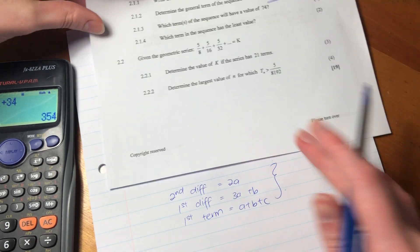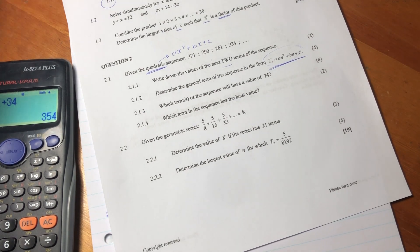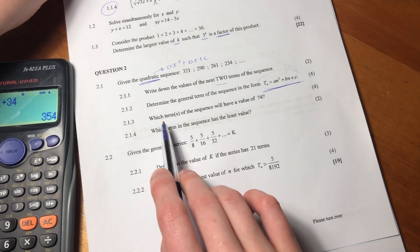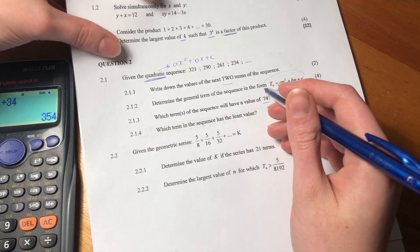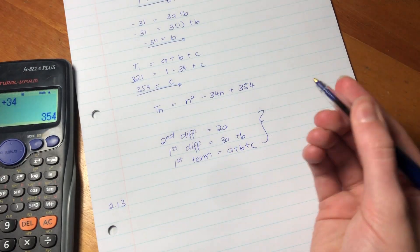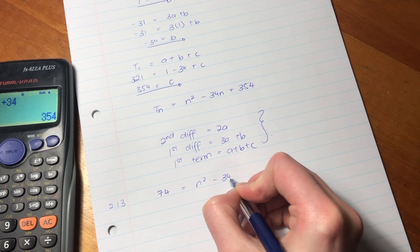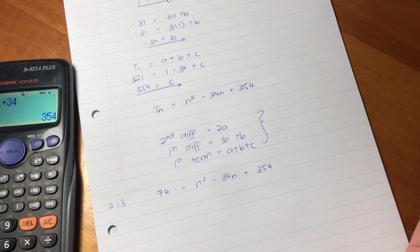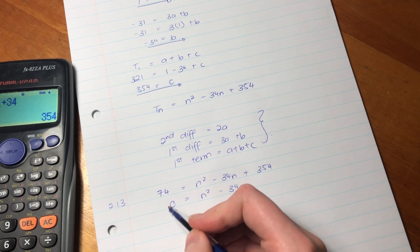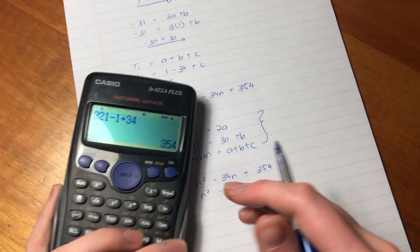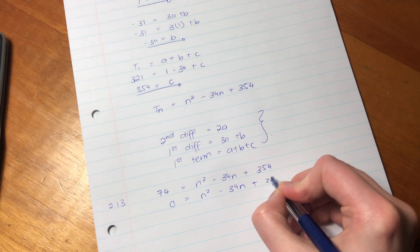Let's now move on to the next question. 2.1.3. Remember to always leave spaces in between your questions just so that it's easy to mark. So it says, which terms of the sequence will have a value of 74. So what we're going to do is we're going to take this equation that we just calculated, and we're going to make it equal 74, because it's saying the term equals 74.